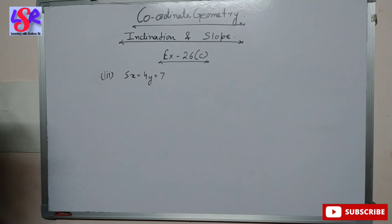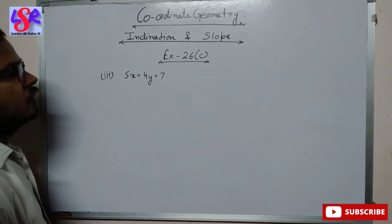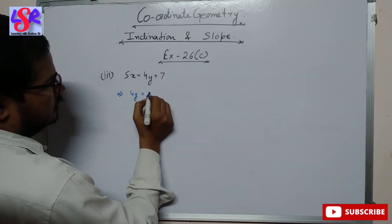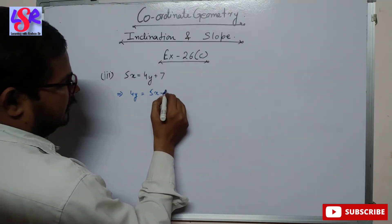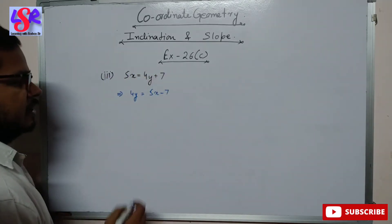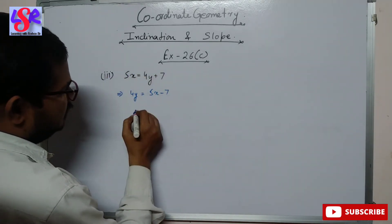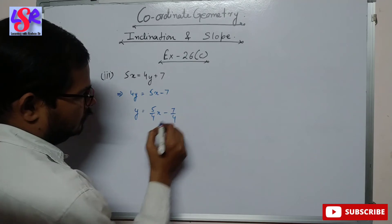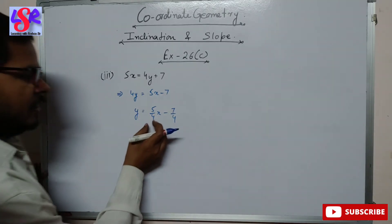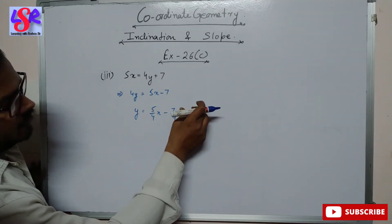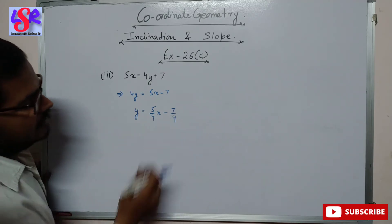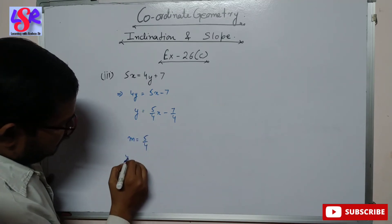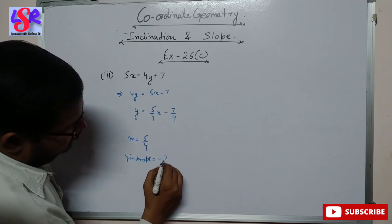Now let's see the third part. Here we have 5x plus 4y plus 7. Rearranging, this becomes 4y equals minus 5x minus 7. Dividing by 4, y equals 5 upon 4 times x minus 7 upon 4. So in place of m we are having 5 upon 4, and in place of y-intercept c we are having minus 7 upon 4. Therefore m equals 5 upon 4 and y-intercept equals minus 7 upon 4.